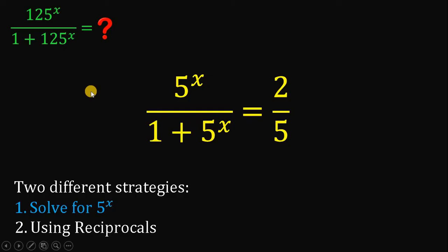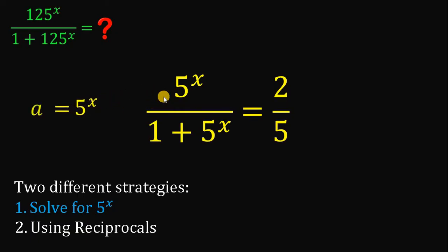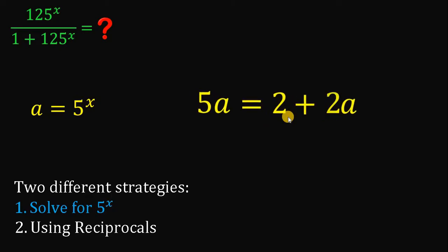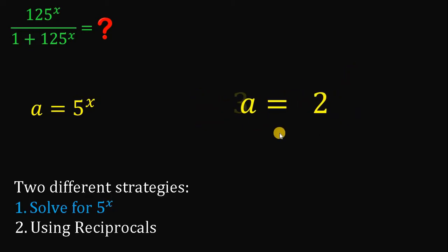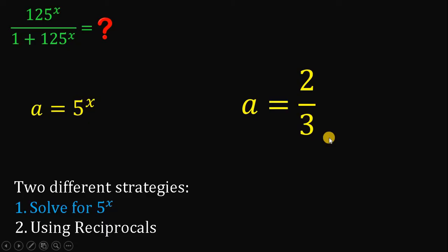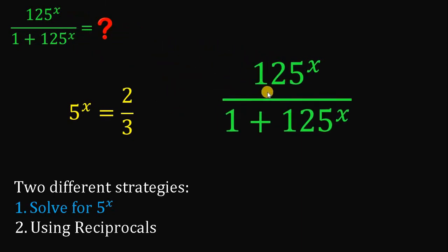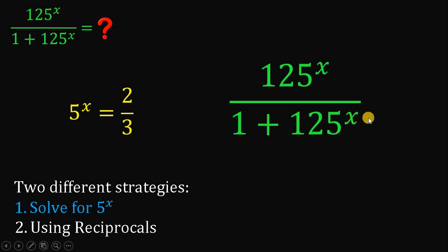Now, take note that we have a common term of 5 raised to x. Therefore, let a equal 5 raised to x, so we can replace all 5 raised to x with the variable a. Now let's solve for the value of a. First, multiply both sides by 5, then multiply both sides by 1 plus a, then subtract 2a on both sides. Dividing both sides by 3 gives us a equals 2 over 3. Since a equals 5 raised to x, we now have 5 raised to x equals 2 over 3. We will use this result to evaluate the expression 125 raised to x over 1 plus 125 raised to x.